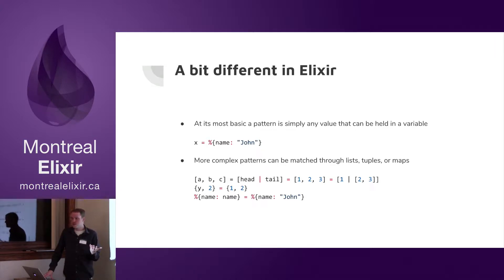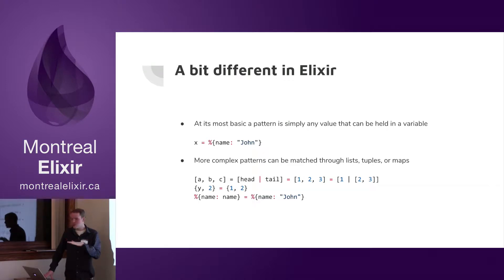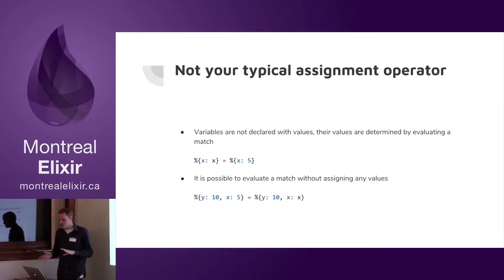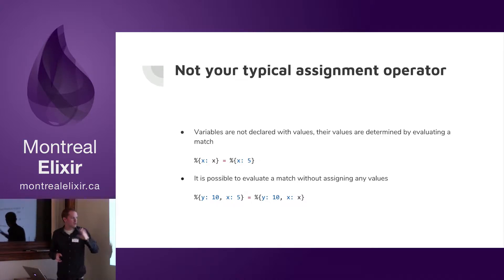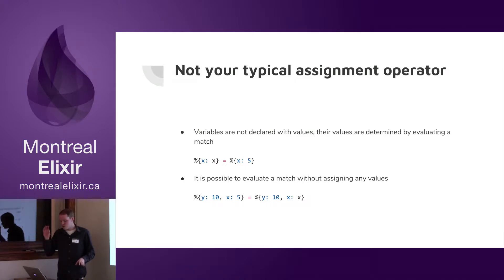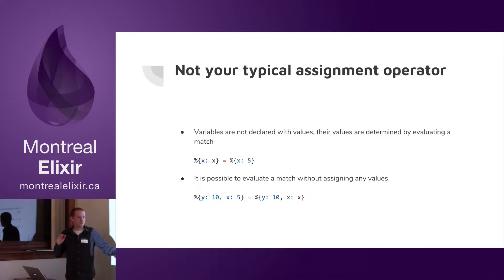If we look at JavaScript, you can have an object with an A and a B value, and now with ES6, you can decompose it in one line. But this is not meant just for setting — there are many applications. It's not your typical assignment operator. Here we have an example where we're setting X to 5 with a map syntax, but then in the second expression we're not setting a value — we're just matching against it. We're saying Y is 10 and X equals 5, so this will throw an error if X is not 5, but it will not set any value.